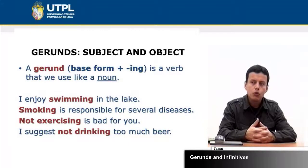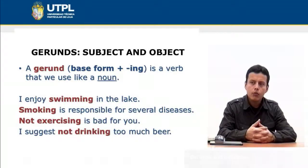In these four examples: I enjoy swimming; the lake smoking is responsible for several diseases; not exercising is bad for you; I suggest not drinking too much beer — you can see the gerund used as a noun in each case.